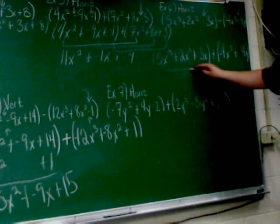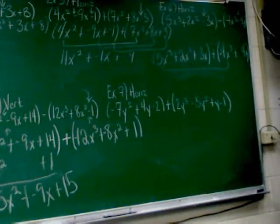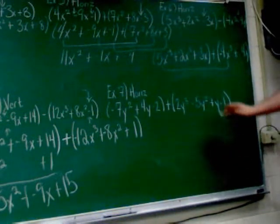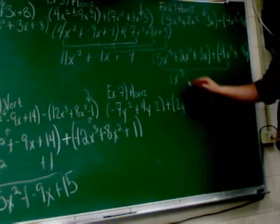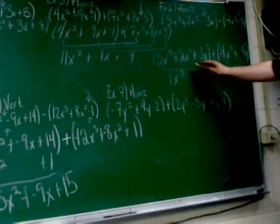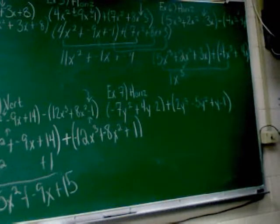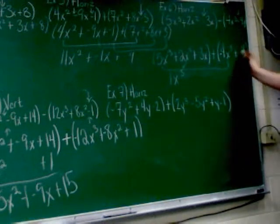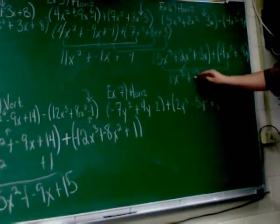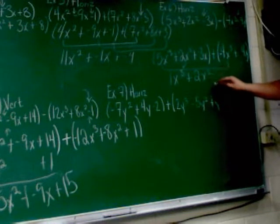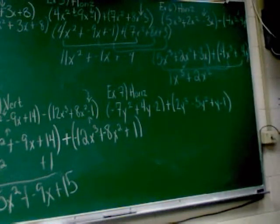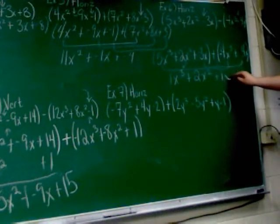Alright, so 5x cubed and negative 4x cubed put together. That's 1x cubed. Earthquake must be on the roof. Alright. 2x squared. Now 2x squared, notice, doesn't have a match. So 2x squared is just going to have to be 2x squared. And negative 3x and 4x make 1x.